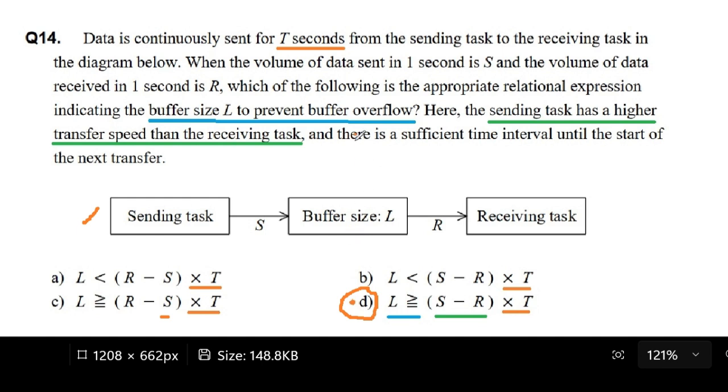But the part here where, what should be the buffer size L to prevent buffer overflow? And when we think about buffer overflow, that means if, for example, the sending task is continuously sending more and more and more, and the buffer size can't hold it anymore, then we get an overflow, the problem which is overflow. And what we want to focus on is how to prevent that.